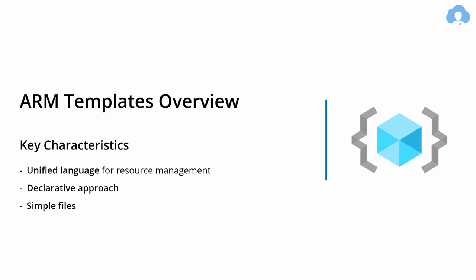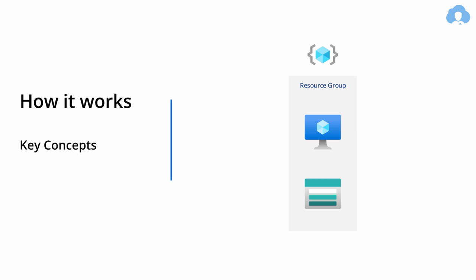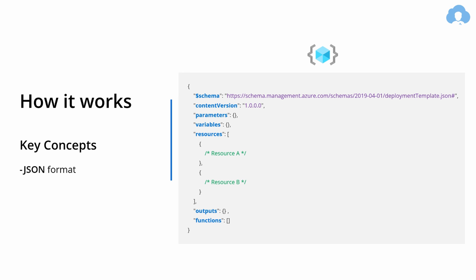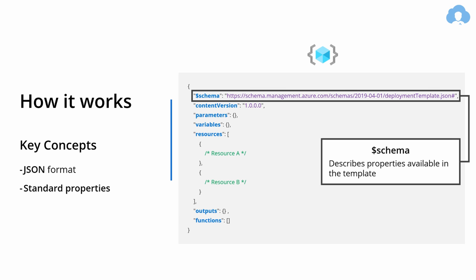Now we can actually move to the templates themselves. They're a unified language for you to manage your resources in Azure using a declarative approach and very simple files. Imagine you have a resource group with a virtual machine and a storage account — you can create a simple template to deploy all that in a single go. It's a simple JSON format with some properties that you need to fill. The schema defines what properties are available for the rest of your template, which is very important if you're using tools like Visual Studio Code with IntelliSense.